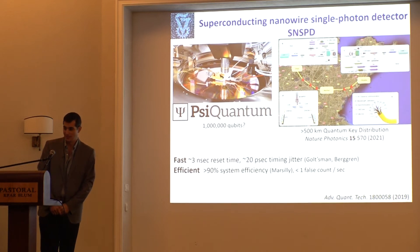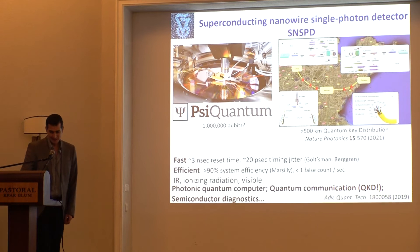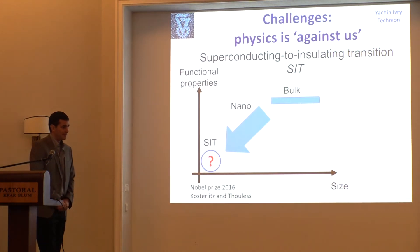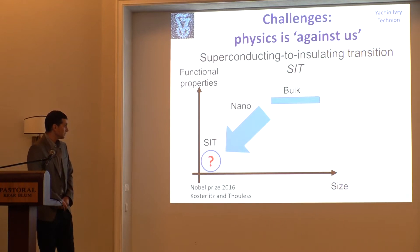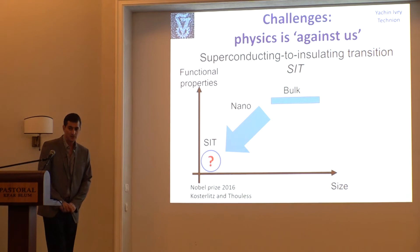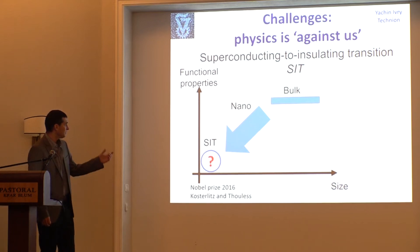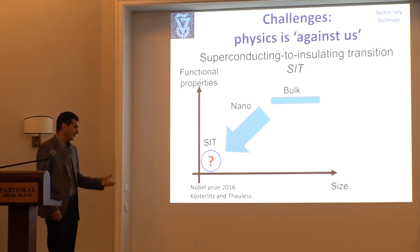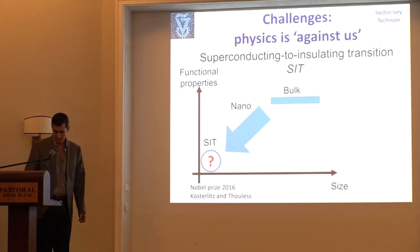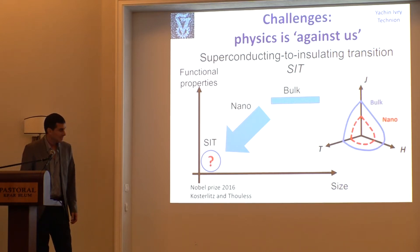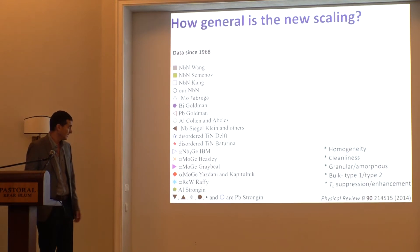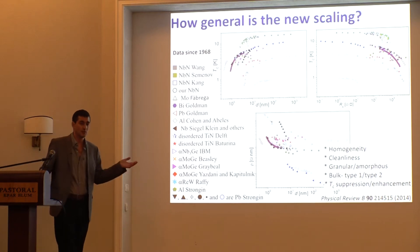But actually, it cannot be fast and efficient simultaneously in the same material — and so this is a problem. One of the problems is that the physics, when we go to low dimensions, is not playing for us. Because as you may know, when we reduce the size of a superconductor, we lose some of the superconducting properties such as TC and delta. So we shrink the material and eventually we have some kind of insulating behavior. This means that if we go from bulk behavior to nano behavior, this is usually what we get, and this is playing against us.